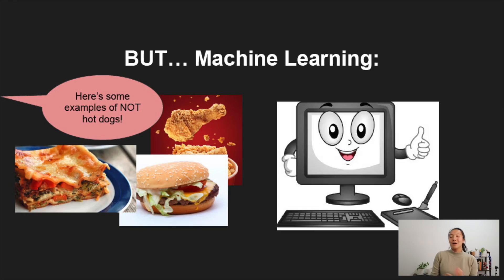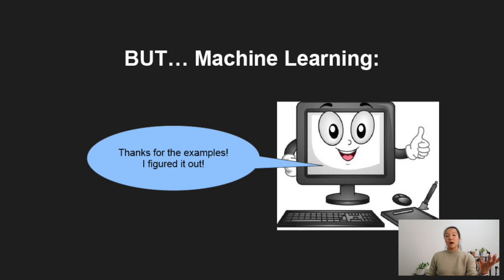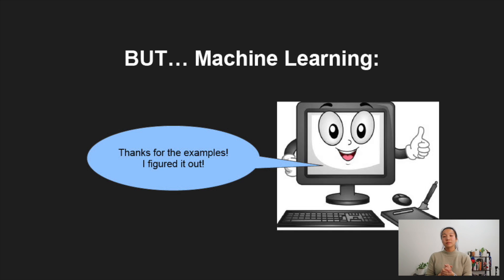Instead, we're going to give our computer all the examples of a hot dog and all the examples of something that's not a hot dog. We want the computer to learn from these examples, compare the pixels in these two different data sets, and eventually be able to find out for itself what contains a hot dog and what does not. That's what it means when we say without explicit programming.